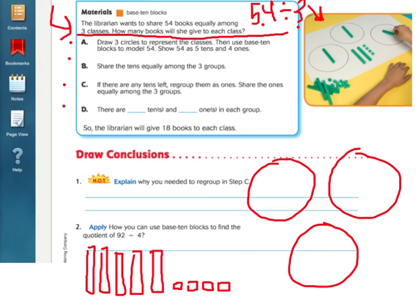So first, I'm going to put out my tens into my three circles. So I'm going to take this long and put it in this circle. This long, put it in this circle. This long, put it in this circle. And then I only have two more. So I don't have enough to put one in each circle.